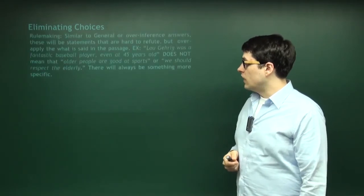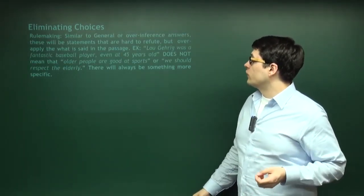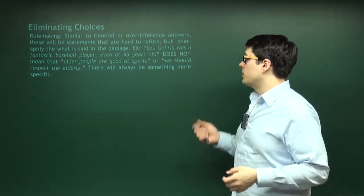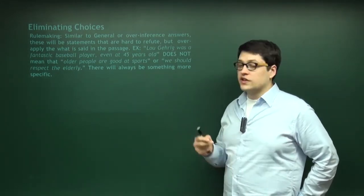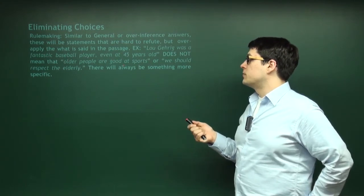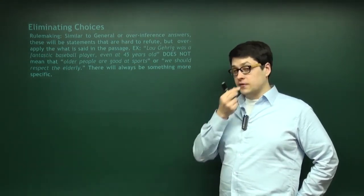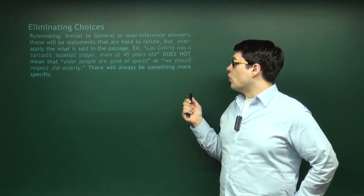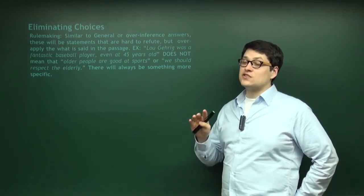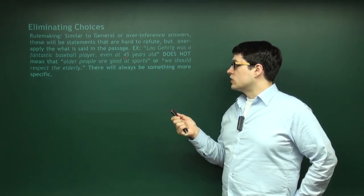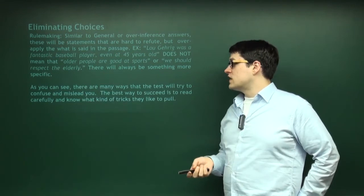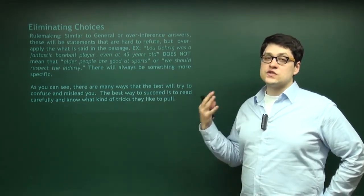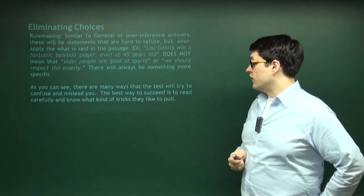Finally, rule-making: similar to over-inference. The passage says 'Lou Gehrig was a fantastic baseball player, even at 45 years old.' It goes way too far to say the passage is arguing that older people are good at sports, or that we should respect the elderly. These make some of the most difficult questions. You can't deny the author might agree with it, but it's far too general. The best way to succeed is to read carefully, read the whole passage, and get used to seeing these logical fallacies committed by the answer choices.